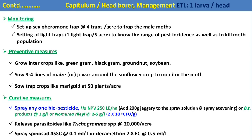We can also sow 3–4 lines of maize or jowar around the sunflower crop to monitor moth activity. Marigold is also used as a trap crop. For curative control, we can spray the crop with the biopesticide HANPV — Helicoverpa armigera Nuclear Polyhedrosis Virus — an entomopathogenic virus. We can also spray with Bt (Bacillus thuringiensis), effective against Lepidopteran caterpillars. Nomuraea is an entomopathogenic fungus, also effective against caterpillars. Trichogramma species are effective egg parasitoids, releasable at 20,000 eggs per acre.